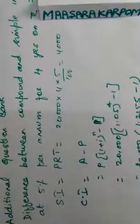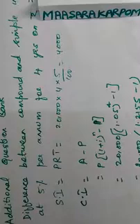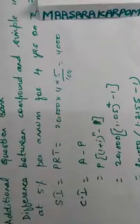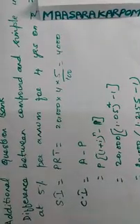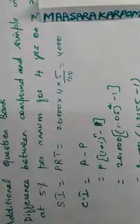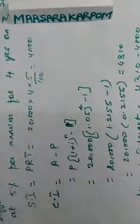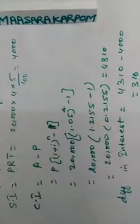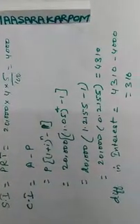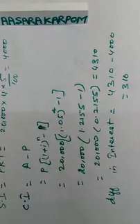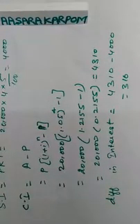Taking P common: CI − SI = P × [(1 + i)^n − 1] − PRT. Substitute the values and simplify to get the difference. The right answer is ₹310.